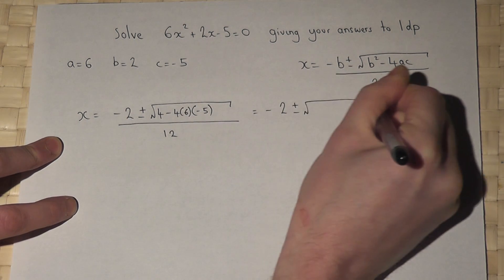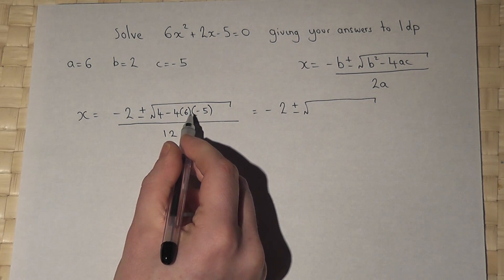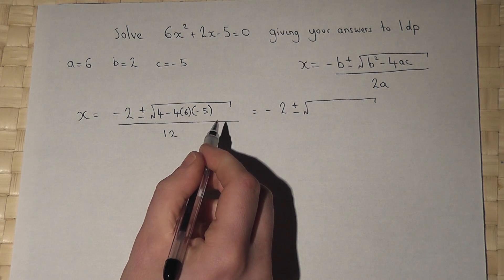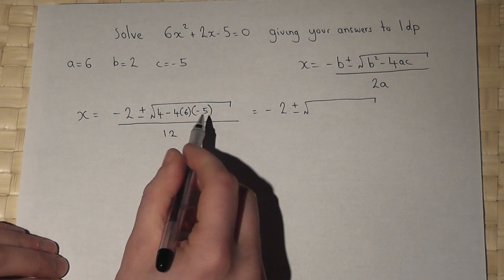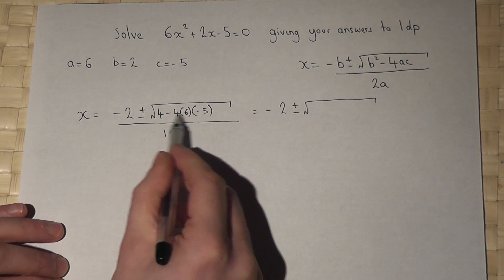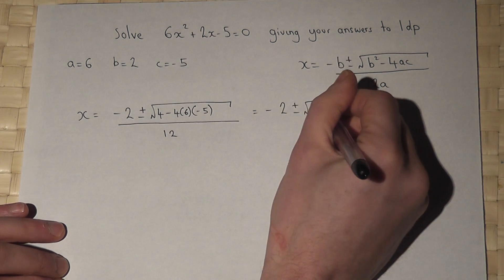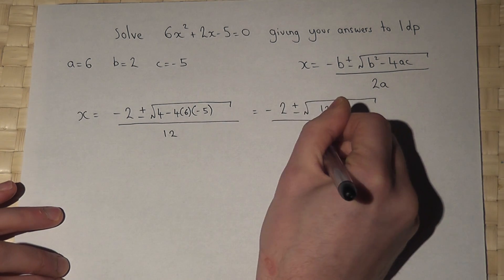So, 4 times 6 is 24, times by 5 is 120. There are two minuses, so 4 plus 120 goes to 124, all divided by 12.